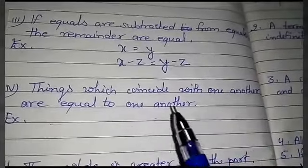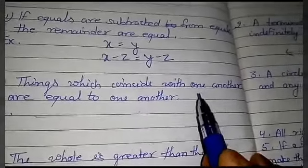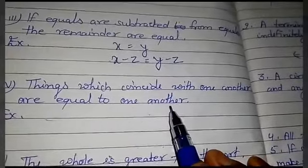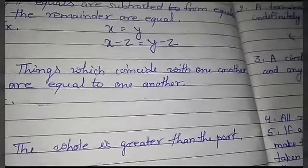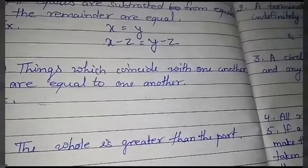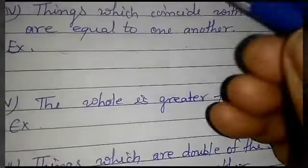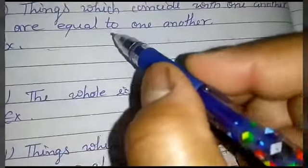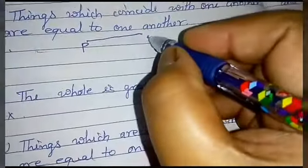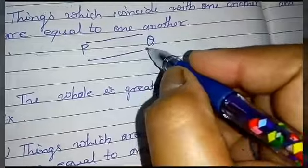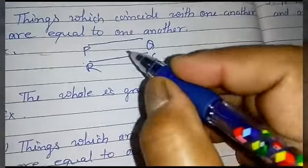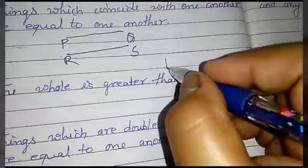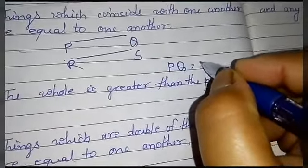Fourth axiom: things which coincide with one another are equal to one another. For example, if line segments PQ and RS coincide with each other, it means PQ = RS.